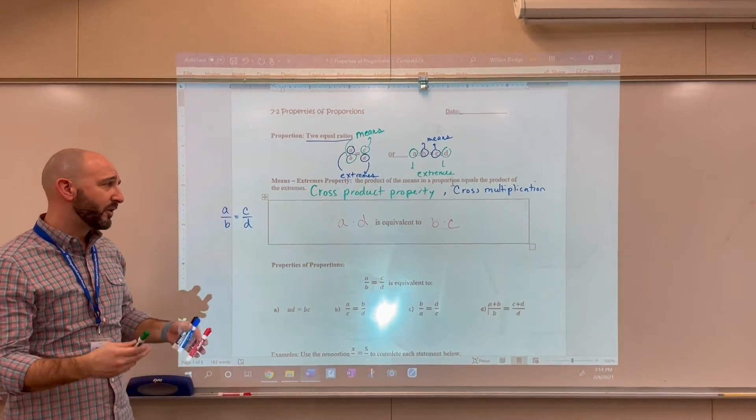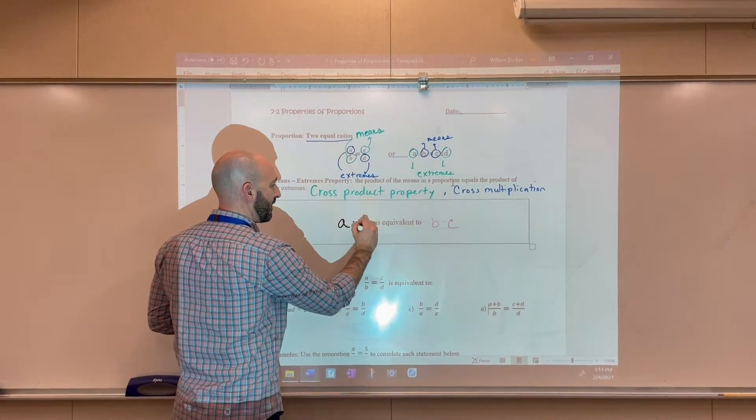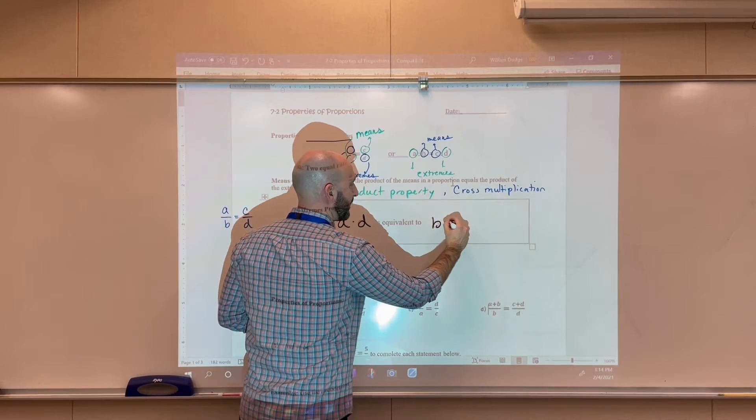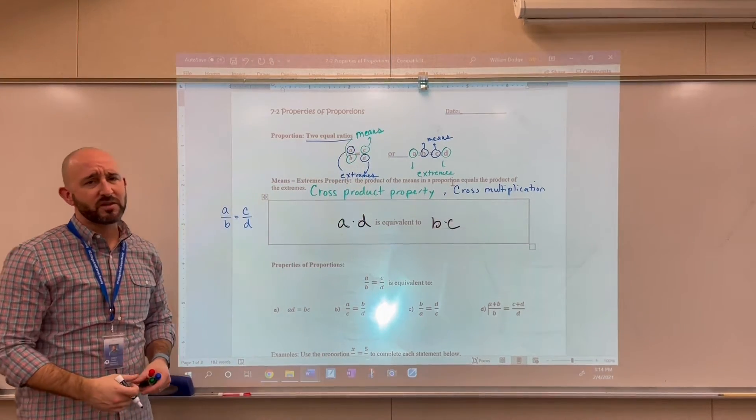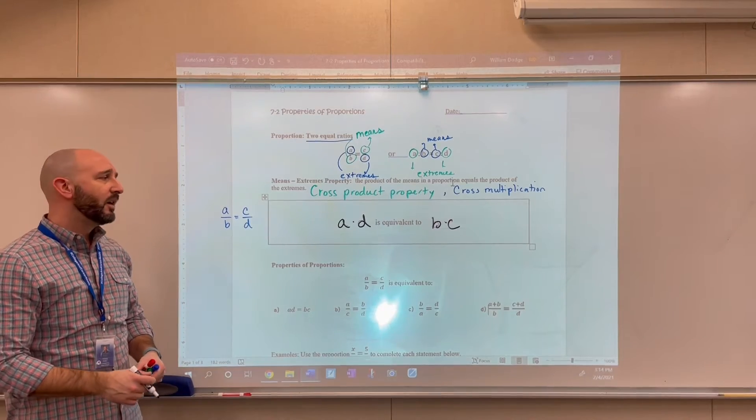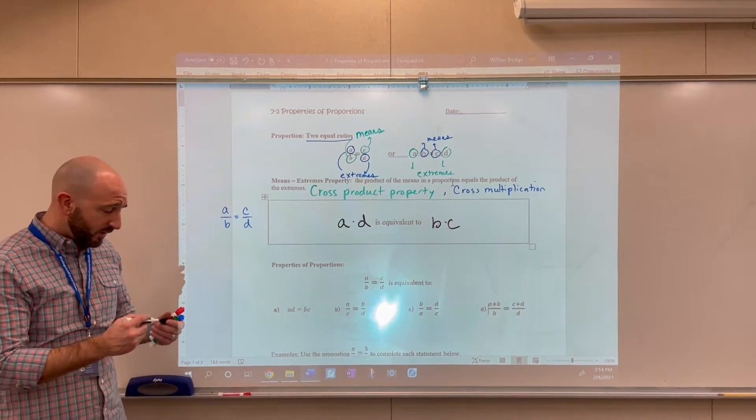Now, this is one that you may have been introduced to in earlier classes. We'll just highlight those again. So A times D equals B times C. But this one's extremely useful, especially when we start talking about similarity, and also when we start talking about trigonometry in the not-so-distant future.